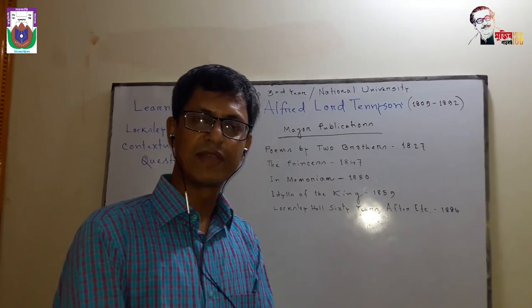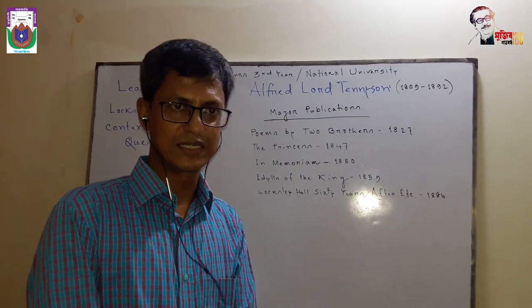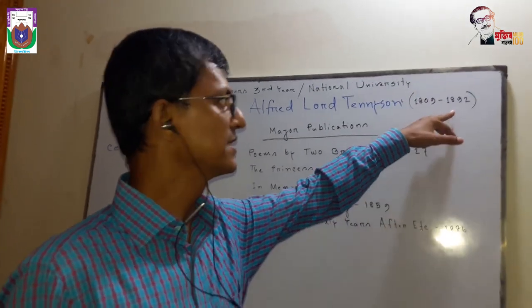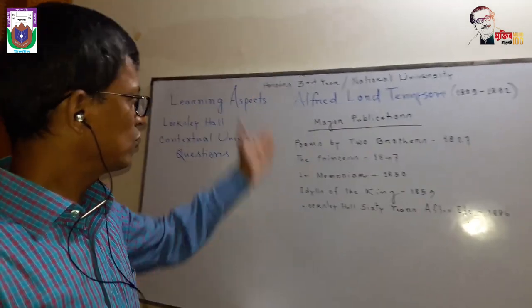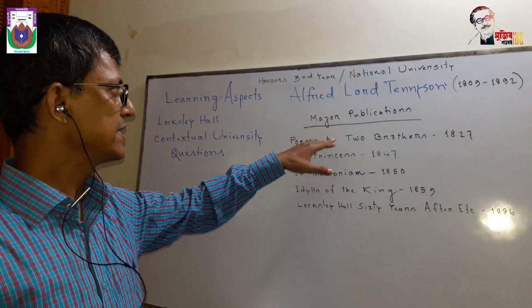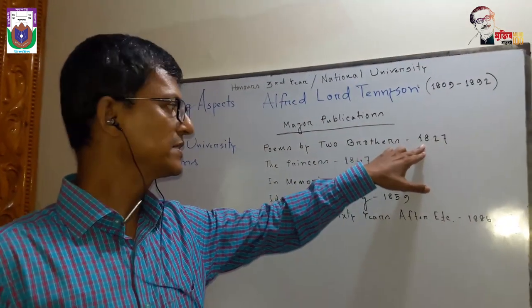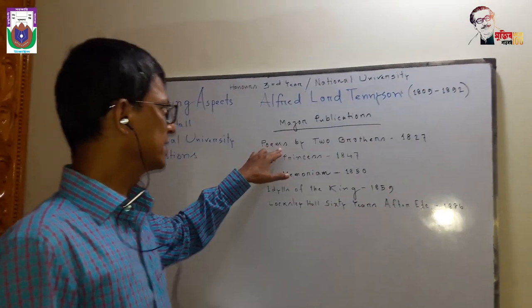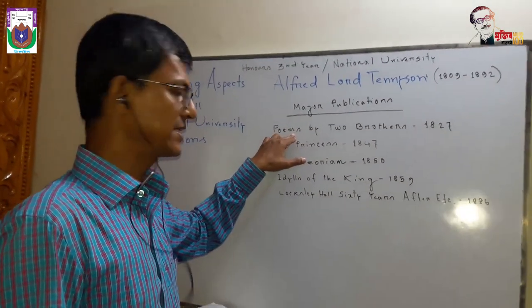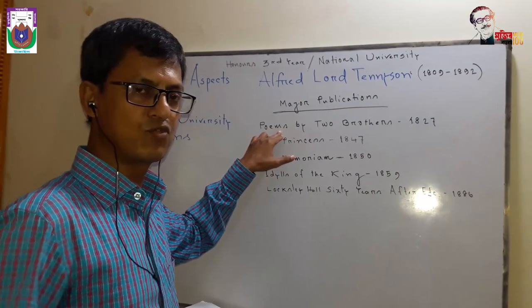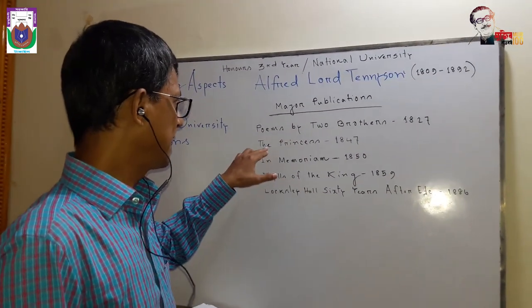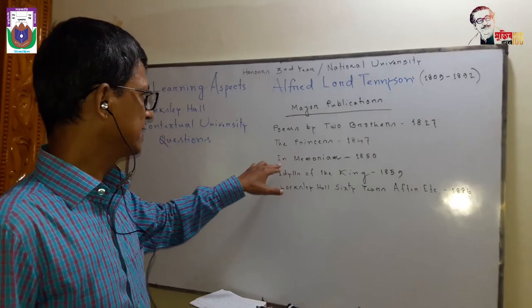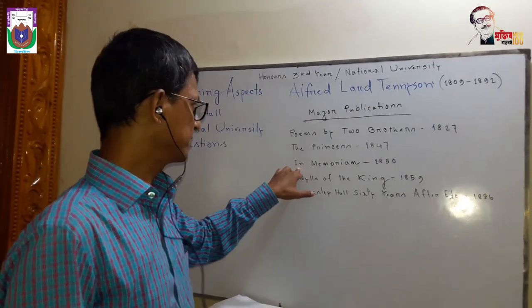Alfred Lord Tennyson is a very prominent name in English literature. He was born in 1809 and died in 1892. His major works include Poems by Two Brothers, published in 1827 — this collection was published at his young age. Then in 1847 he published The Princess.